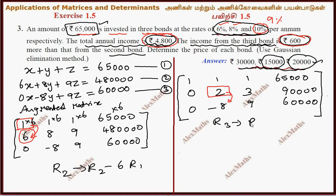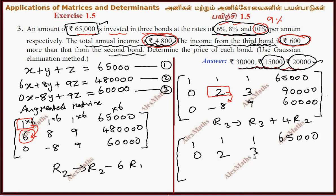R3 gives R3 plus 4 times R2. First row, copy as it is. Second row, copy as it is. Third row, multiply R2 by 4 and add.